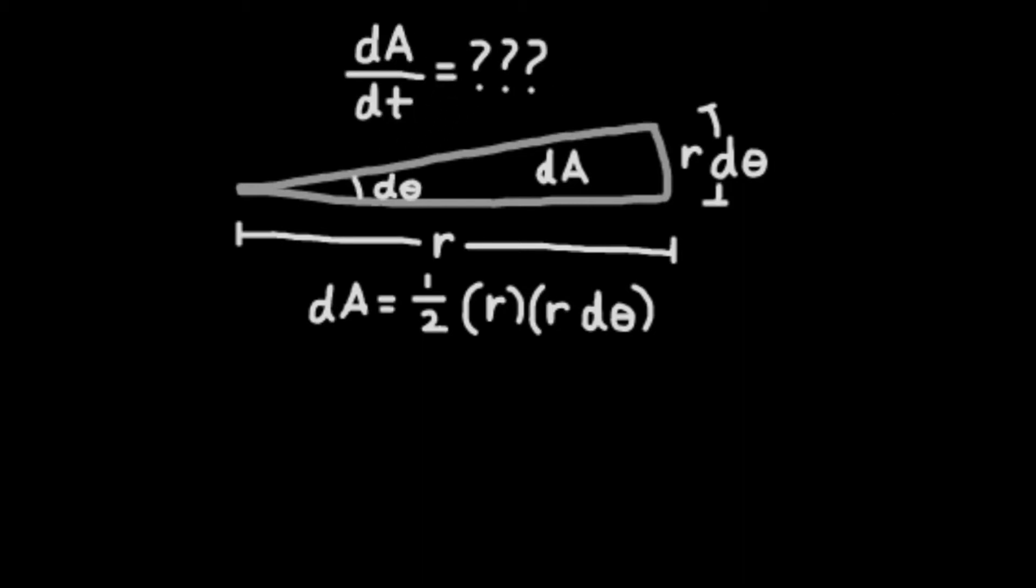The area, then, of this infinitely small section can be found using the area of a sector, 1 half r times r d theta. Kepler's law states that the area of a sector denoted by a particular time frame must be the same as any other sector's area within the ellipse in the same time interval. So let's take a look at our infinitely small sector with respect to time.